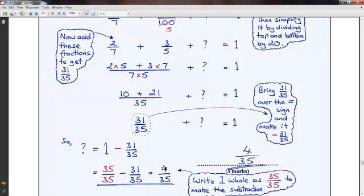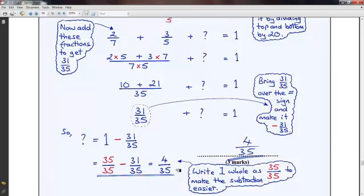In other words, four thirty-fifths is the fraction of students that chose the pizza meal. And that is your answer there. Thank you very much.